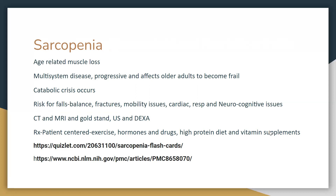Sarcopenia is an age-related muscle loss and multi-system disease that progresses over time. It puts patients at a catabolic crisis where they tend to fall due to balance issues, increasing fracture risk. Patients also have mobility issues along with cardiac, respiratory, and cognitive symptoms. CT scan and MRI are the gold standard for diagnosis; ultrasound and DEXA scan are also used. Treatment includes lifestyle modification with exercise, hormones and relevant drugs, high-protein diet, and vitamin supplementation. Practice sarcopenia questions on Quizlet to build familiarity.